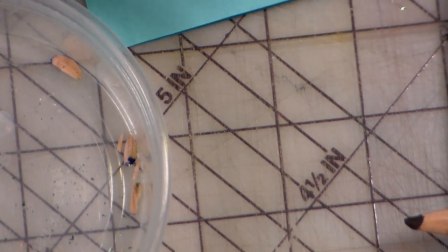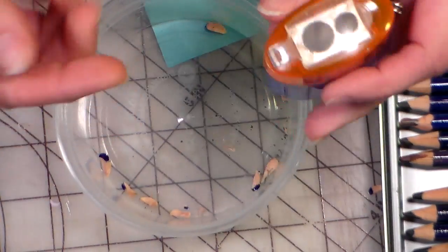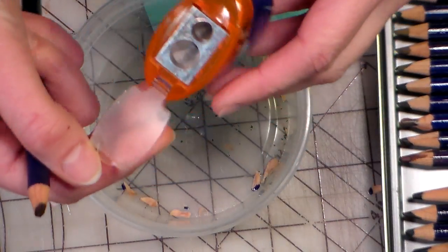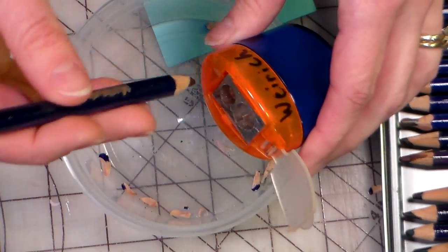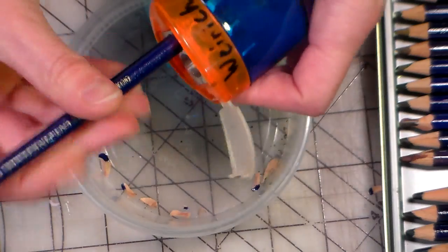So sometimes though, you want a point on your pencil—like perhaps you want to do some detail work, or maybe you just don't have a razor blade handy. Don't use an electric sharpener. Use a handheld sharpener because you're not going to be jostling it. In an electric sharpener, it's going to get jostled around quite a bit.